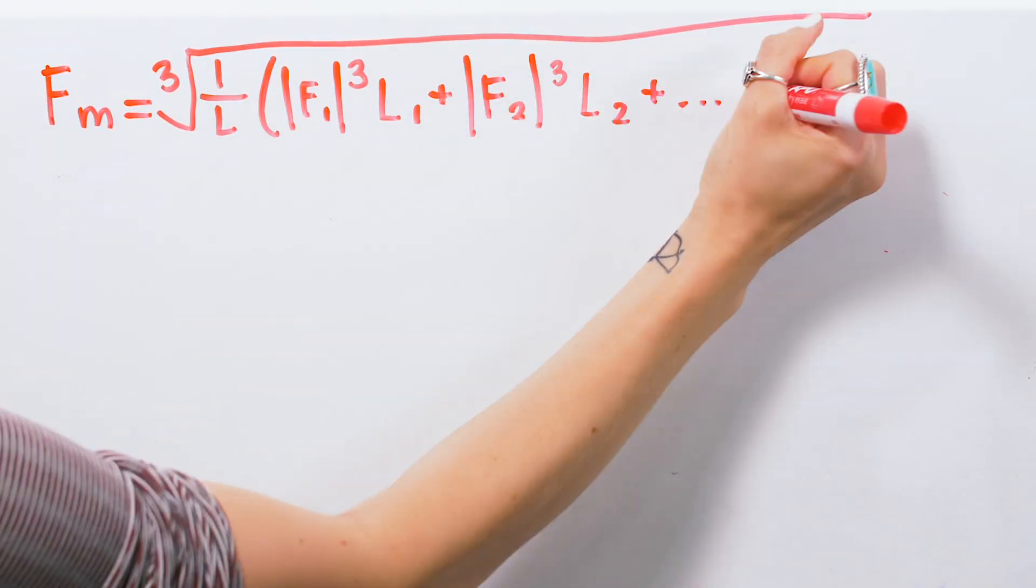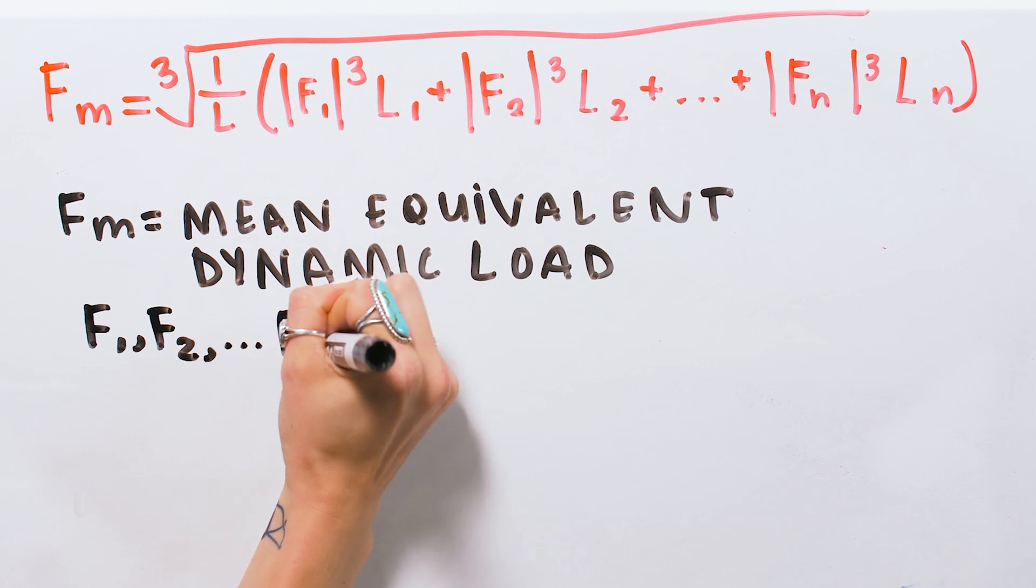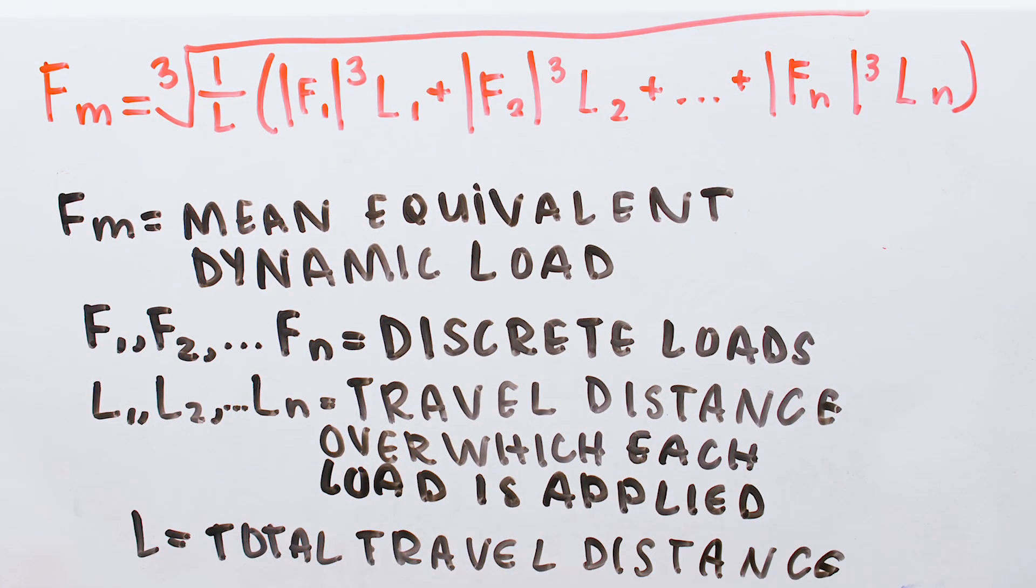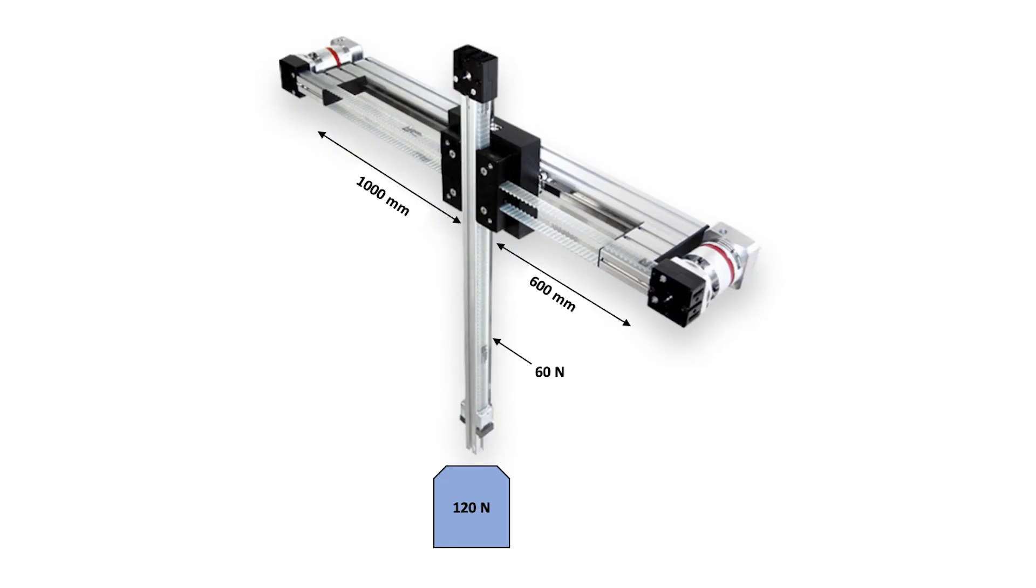This converts the travel in each discrete phase to a percentage of the total travel. For example, let's say an actuator is used in a pick-and-place application, where it moves to a position, picks up a part that weighs 120 newtons, then moves to another position and places the part. After placing the part, the actuator moves back to the start position and the cycle starts over.